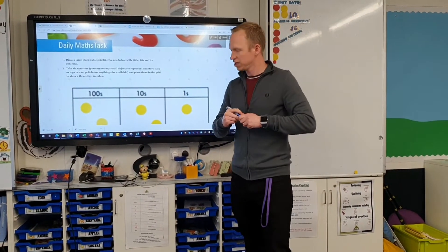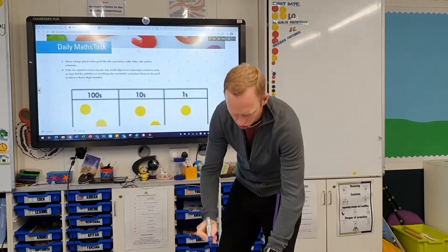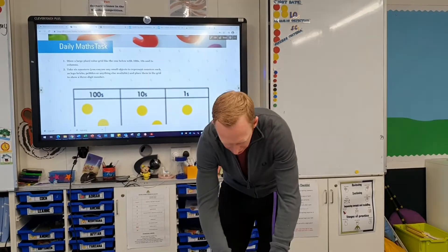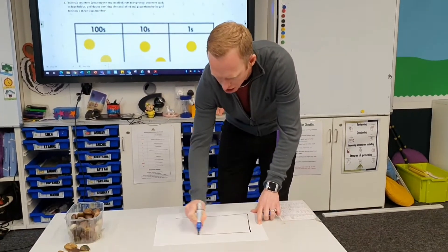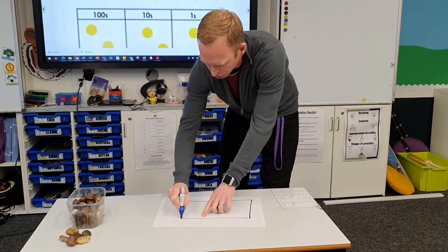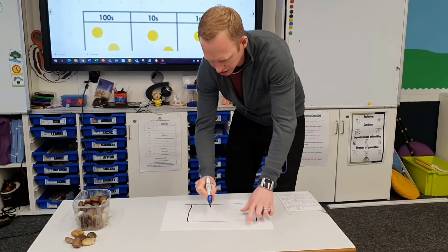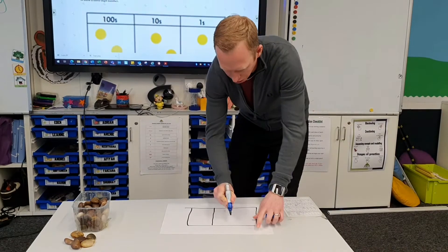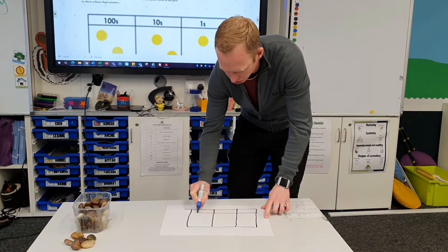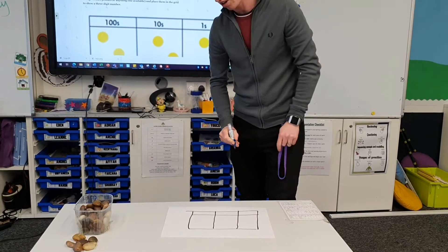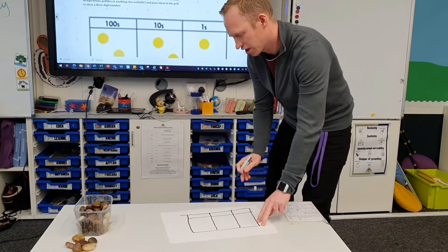The first thing you need to do is draw out a place value grid for your hundreds, tens and ones. It needs to be two rows and three columns, like so.